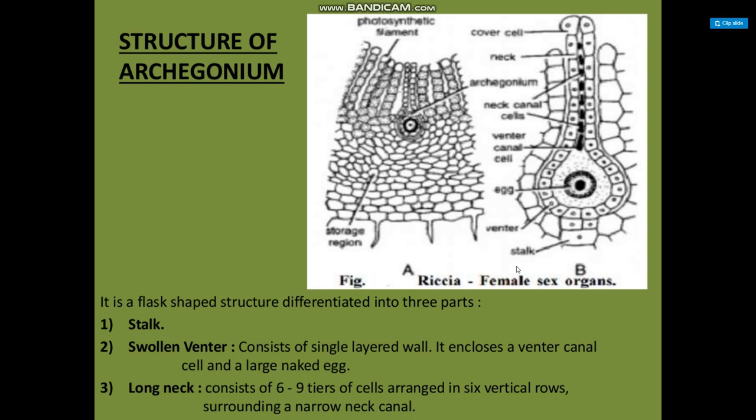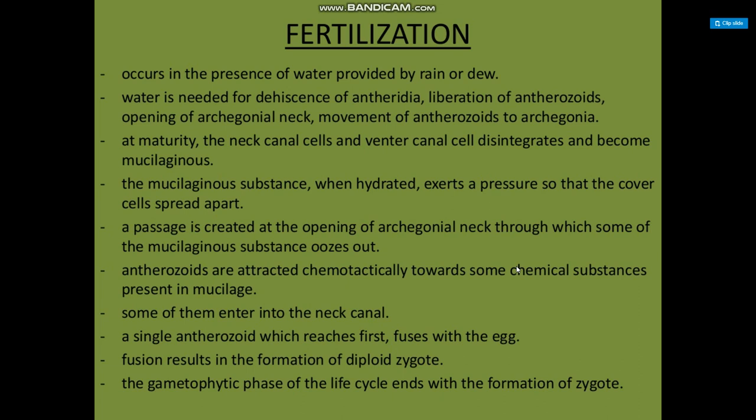Structure of archegonium, the female sex organ: it is a flask-shaped structure differentiated into three parts — stalk, swollen venter, and long neck. The swollen venter consists of a single-layered wall and includes a venter canal cell, a large canal cell, and an egg. The long neck consists of six to nine cells arranged in six vertical rows surrounding a narrow neck canal. Fertilization occurs in the presence of water provided by rain or dew. Water is needed for dehiscence of antheridia, liberation of antherozoids, opening of the archegonial neck, and movement of antherozoids to archegonia. At maturity, the neck canal cell and venter canal cell disintegrate and become mucilaginous. This mucilaginous substance, when hydrated, exerts pressure causing the cover cells to spread apart, and a passage is created at the opening of the archegonial neck through which some of the mucilaginous substance oozes out.